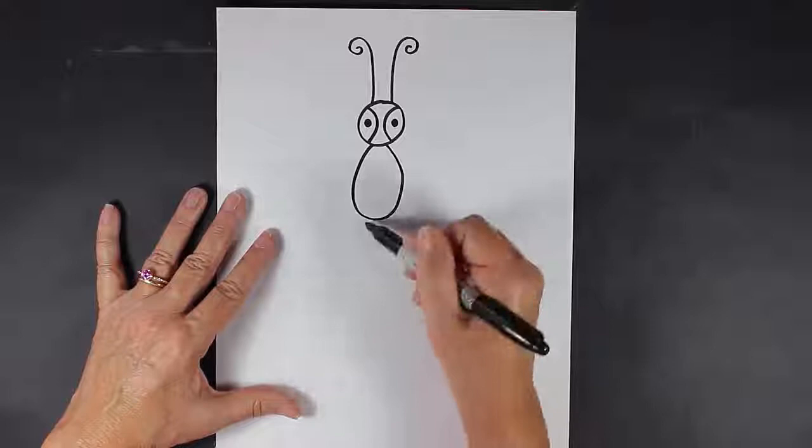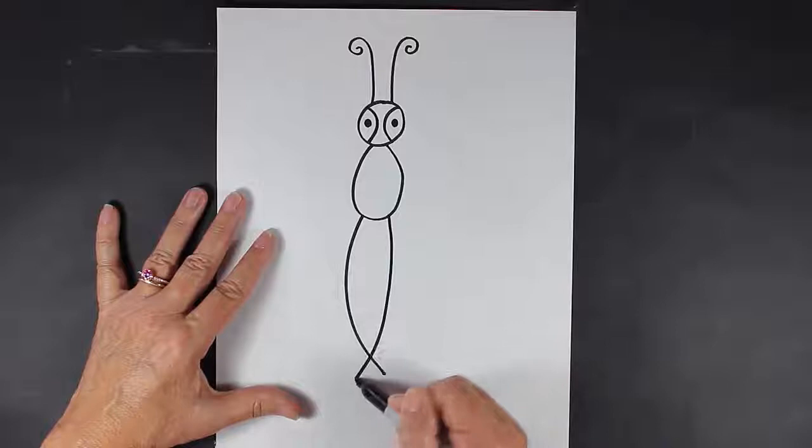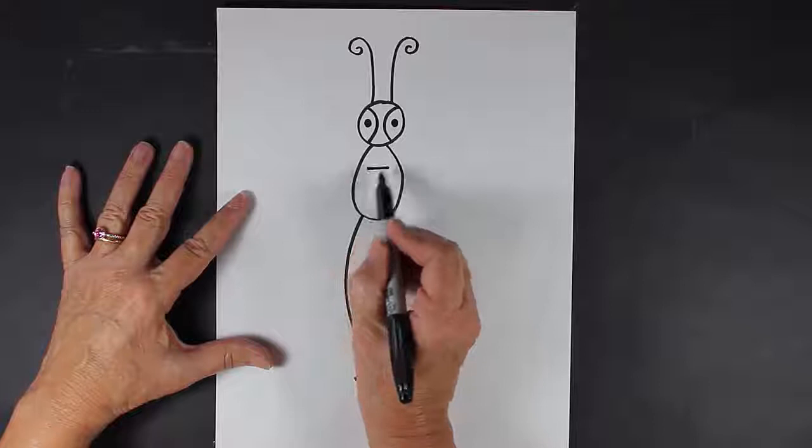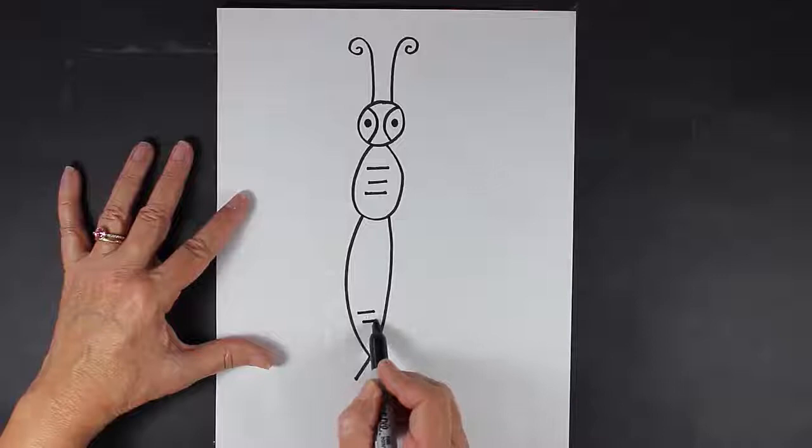Then for the lower part of his body we make a curved line and then another curved line. See how it crosses at the bottom?